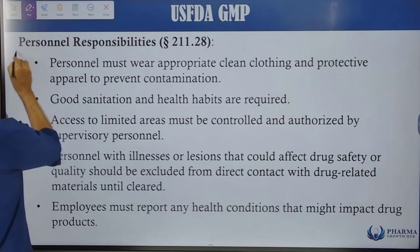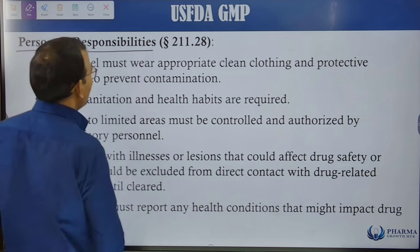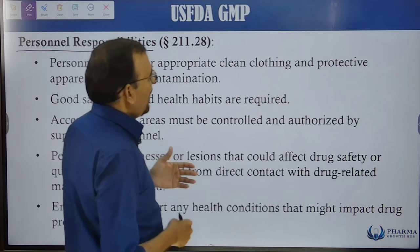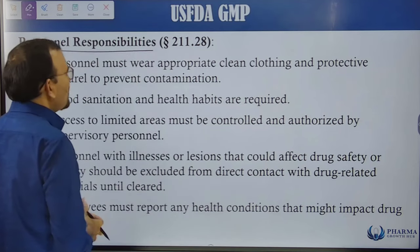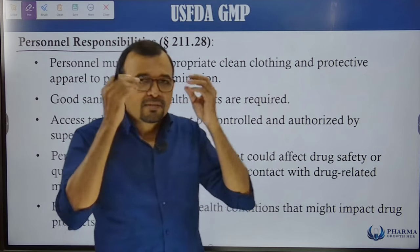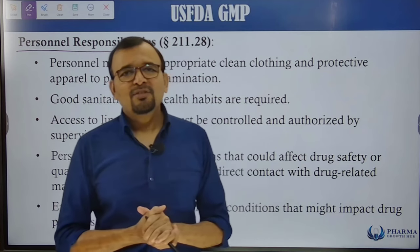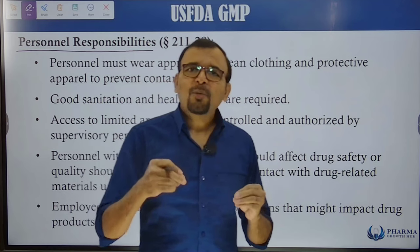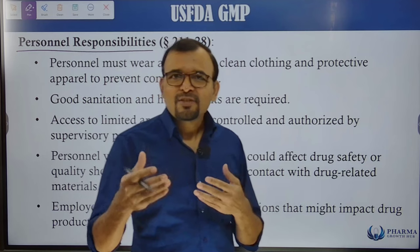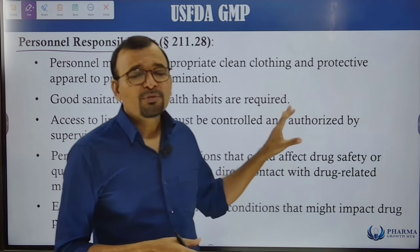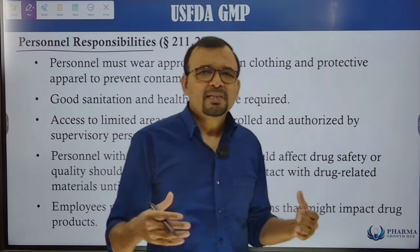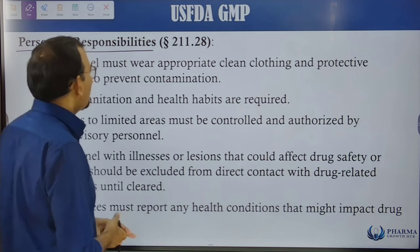The next point is personnel responsibilities. Personnel must wear appropriate, clean clothing and protective apparel to prevent contamination — this includes gowning procedures, wearing gloves, safety glasses, or goggles according to the need. Especially for sterile or injectable manufacturing facilities, the gowning procedures are very strict compared to oral solid dosage form manufacturing.